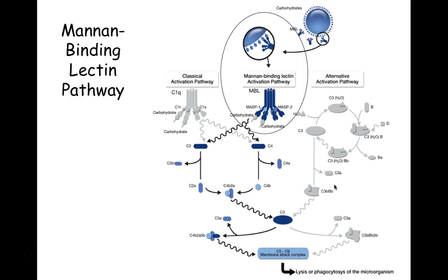Taking a close look at the structural similarities between C1 and MBL, you can see that similar structure is conserved with similar function. When MBL attaches to the mannose sugars on the surface of bacteria, it functions very much like C1 attaching to antibody on the bacterial surface, so we can cleave C4 and C2, create large subunits, and deposit those on the bacterial cell surface to make a C3 convertase.